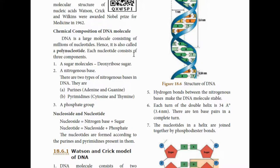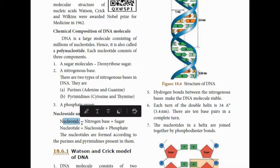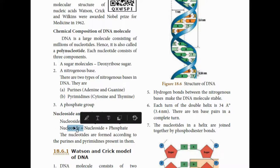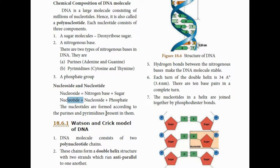So from this we get: one DNA molecule is made up of millions of nucleotides. Each nucleotide has three components: one sugar molecule, one nitrogenous base — purines contain adenine and guanine; pyrimidines contain cytosine and thymine — and the phosphate group. Nucleoside means nitrogenous base plus sugar. Nucleotide means nucleoside plus phosphate. DNA is made of millions of nucleotides joined in different combinations according to the purines and pyrimidines present.